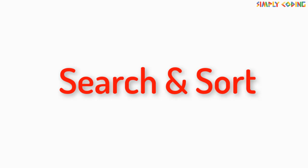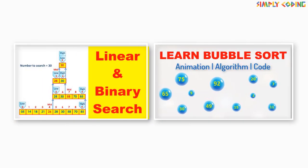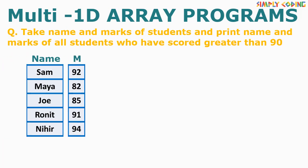Now we will do some programs involving searching and sorting. I am using linear search, binary search, and bubble sort, though you can use any other algorithms. Their algorithm explanations have already been covered in separate videos; here I will explain how to use them in multiple array scenarios. The first program takes in names and marks of students and prints details of all students who have marks greater than 90.